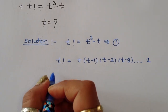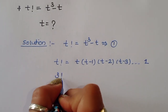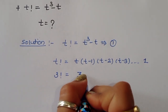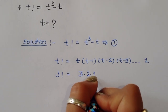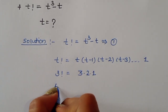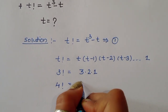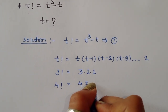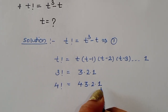For example, factorial of 3 is equal to 3 times 2 times 1. Factorial of 4 is equal to 4 times 3 times 2 times 1.